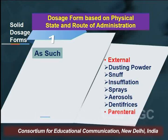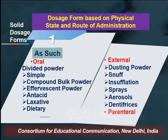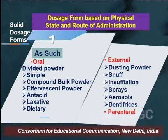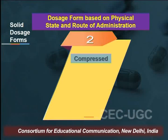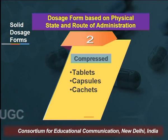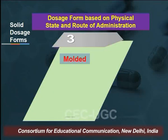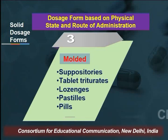The third categorization under the integrated classification is solid dosage forms. Solid dosage forms can be given as-is in powder form, categorized by route of administration into oral, external, or parenteral. Under oral route, they are subclassified into divided powders and compound divided powders. Under external use, we have dusting powder, snuffs, insufflations, sprays, aerosols, and dentifrices. The second type under solids is compressed form, including tablets, capsules, and cachets. The last is molded type, covering suppositories, tablet triturates, lozenges, pastilles, and pills.